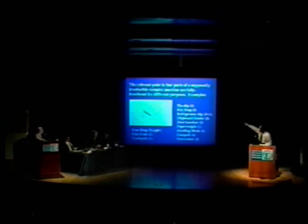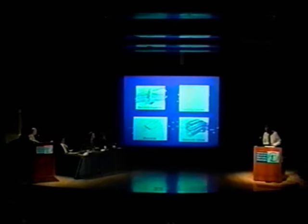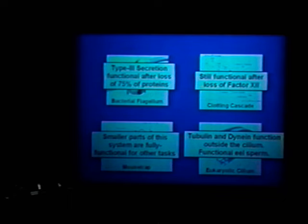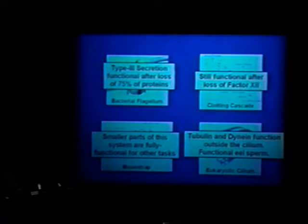The point is that the parts of an irreducibly complex machine are fully functional for different purposes. My closing question: you've brought us four systems as examples of irreducible complexity, and every one of those systems breaks down upon inspection — the Type 3 secretory system still works having lost 75% of its proteins, the clotting cascade still functional despite losing a protein, smaller parts of the mousetrap still work, tubulin and dynein still function outside the cilium. If ever any idea was subject to an empirical test as easily as irreducible complexity, this is it, and it has failed in every single test. Would you like to respond? Yes. I appreciate your point of view but I disagree.